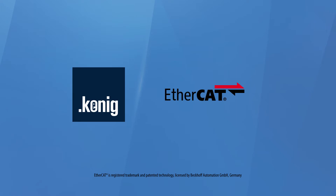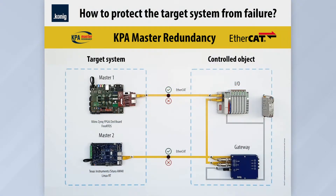Koenigpa GmbH develops solutions and products based on ATHICET technology. At this stand, we demonstrate the functionality of our patented master redundancy technology, which allows you to protect the industrial network from one of the most serious problems: the failure of your control system.